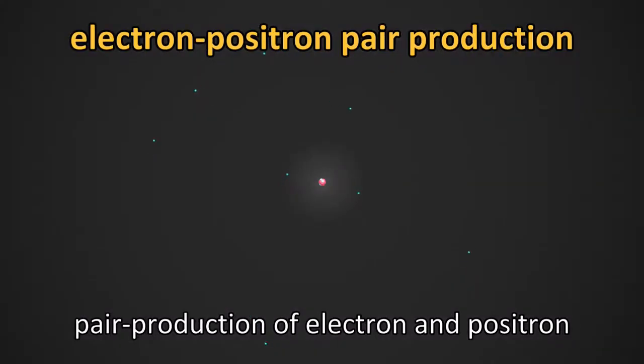Electron-positron pair production is a phenomenon in which gamma rays are lost and electrons and positrons are produced by the Coulomb field created by the atomic nucleus.